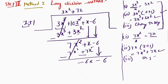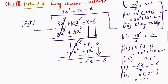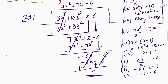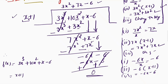Repeat the steps again. Divide −6x by x to get −6. Multiply −6 by (x + 1) to get −6x − 6. Write this below and change the sign. They cancel, giving remainder 0. Therefore f(x) = 3x³ + 10x² + x − 6 = (x + 1)(3x² + 7x − 6).